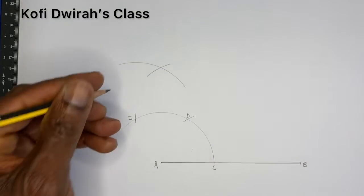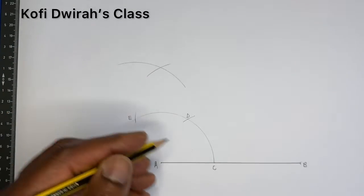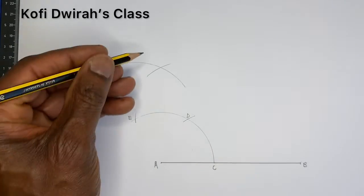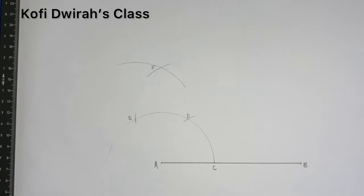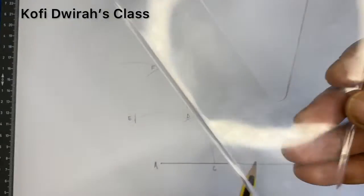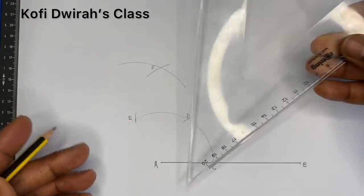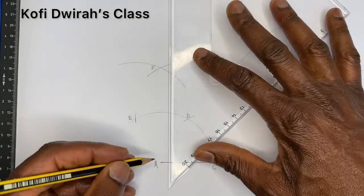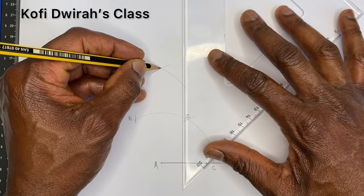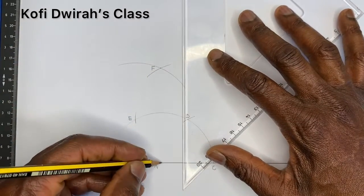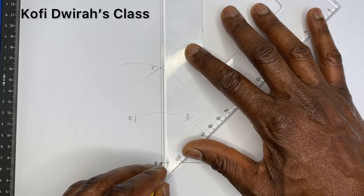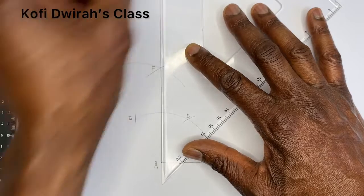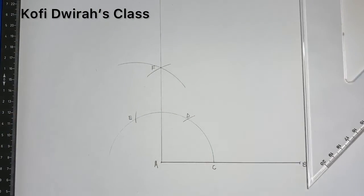So we have these points labeled A, B, C, D, E, and F. We have point F. Then you draw a straight line from point A to point F. You draw a faint line like this.